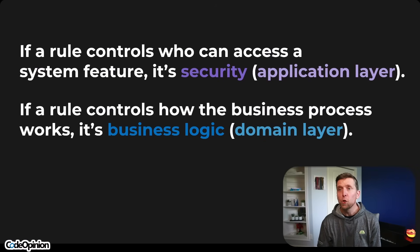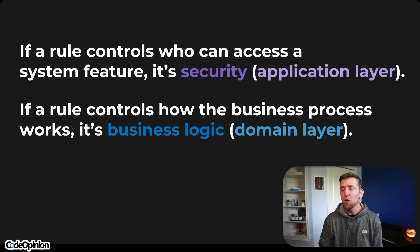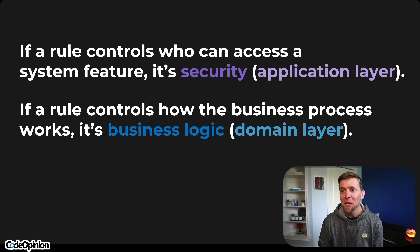That's the clear difference between authorization and business validation and business rules. When your domain starts knowing about the user making the request, it drifts further from purely modeling the business capabilities and business rules. If your domain knew about the dispatch manager — the user making the request — that would muddle what it actually cares about, which is modeling the domain. So: if a rule controls who can access a system feature or operation, it's security — application layer. If a rule controls how the business process works, it's business logic — it's in your domain.